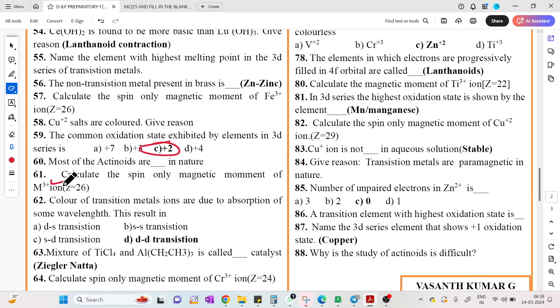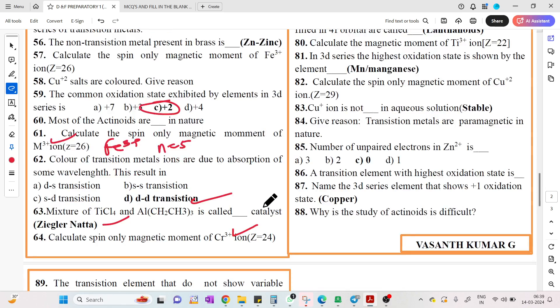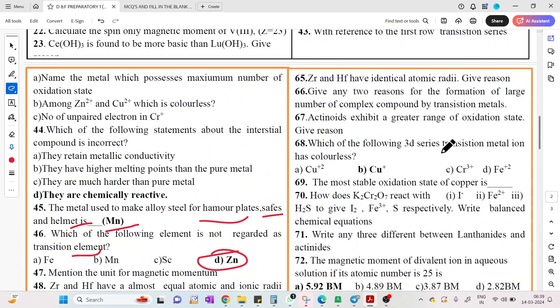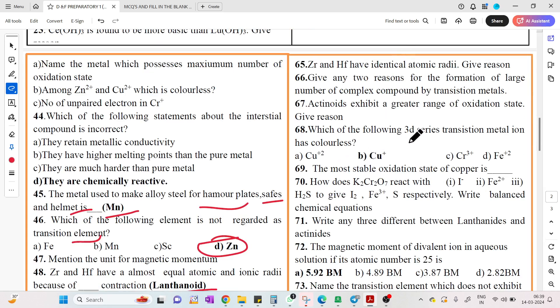Common oxidation state of 3D series is plus 2. Spin only magnetic moment of Fe3+ ion: N equals 5. Color of transition metal is due to d-d transition. TiCl4 with triethyl aluminum is called Ziegler-Natta catalyst. Magnetic moment of Cr3+. 3D series transition has colorless ion - Cu+ is colorless.